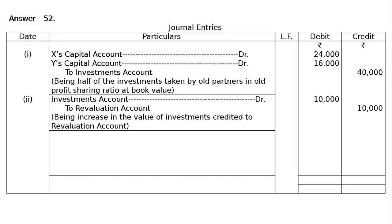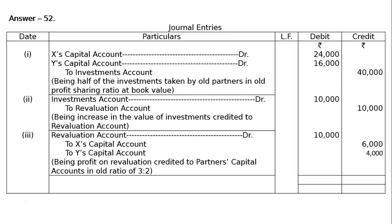In the revaluation account, it is by investments. The third entry will be revaluation account debited — this is profit. There is only one entry for revaluation, that is by investments Rs 10,000, hence this is the profit. When profit is transferred, the entry will be: revaluation account debited Rs 10,000, to X's capital account Rs 6,000 and to Y's capital account Rs 4,000. Being profit on revaluation credited to partners' capital accounts in old ratio of 3 to 2.